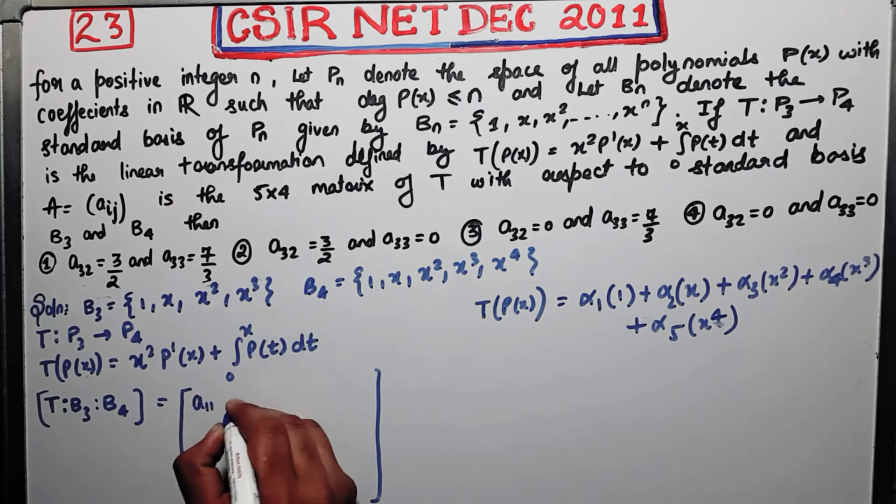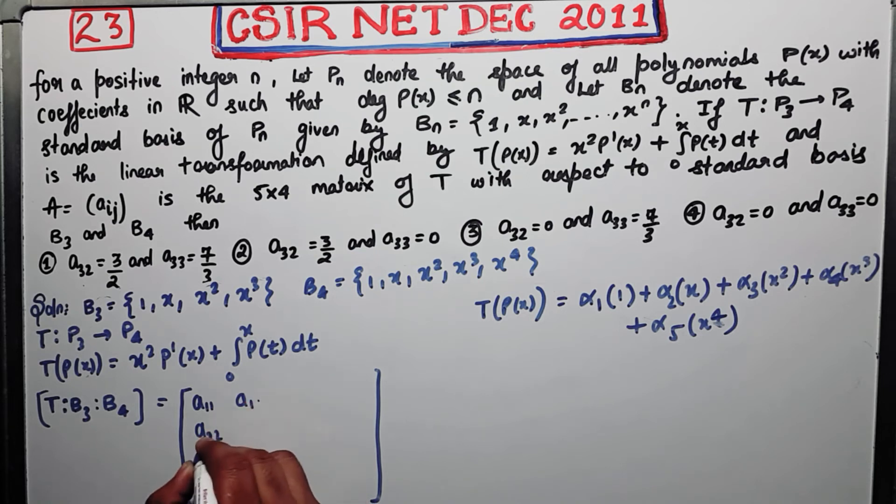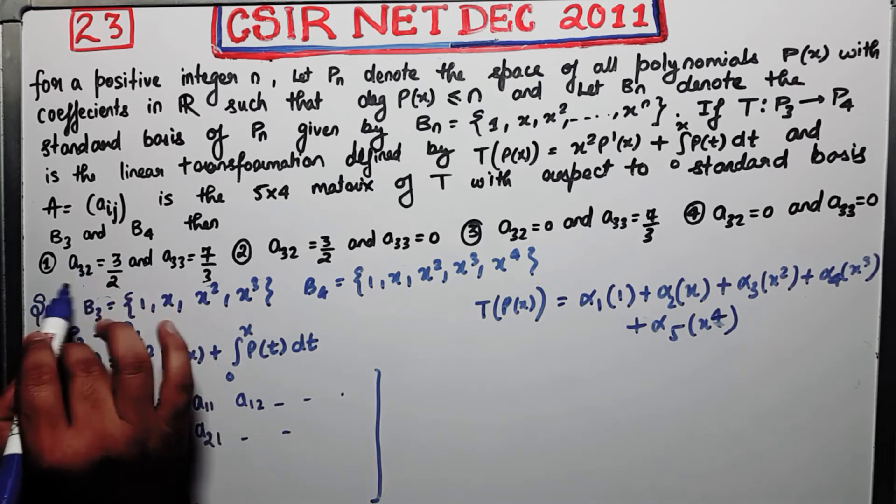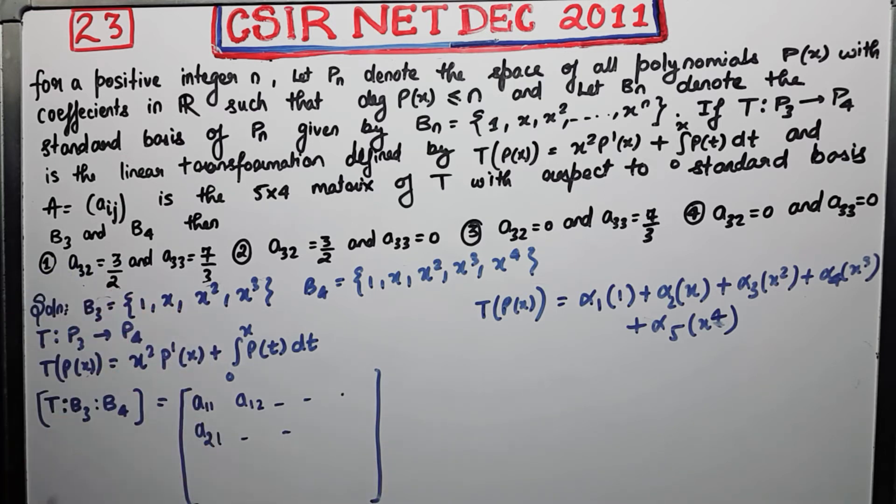Now what is the element that is required? So this will be a matrix with elements a_11, a_12, etc. So you need the a_32 element, which means third row second column, this one is required. And you also need a_33, that means third row third column. So these are the two elements that are required.